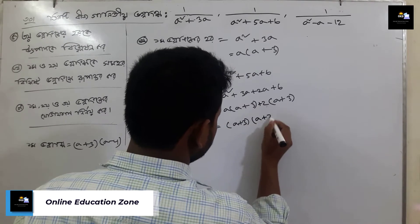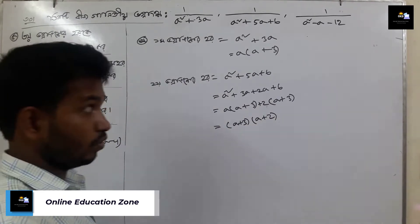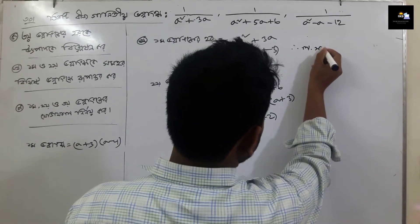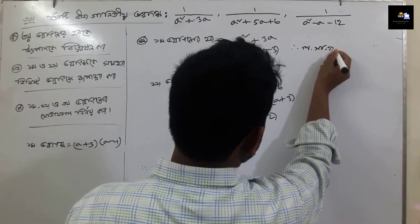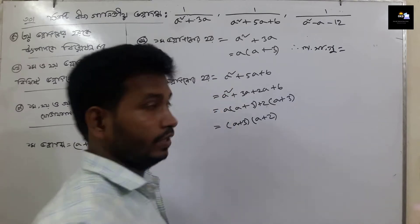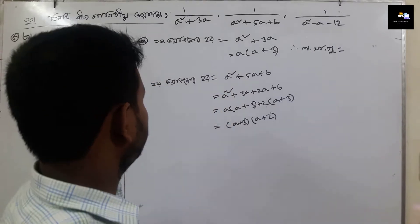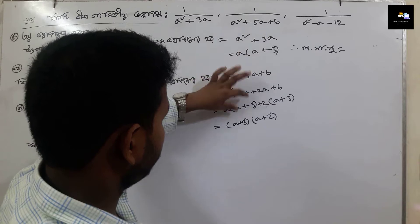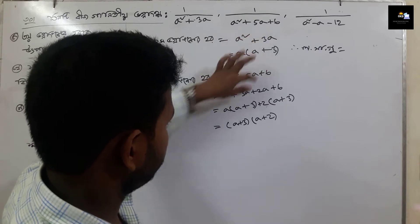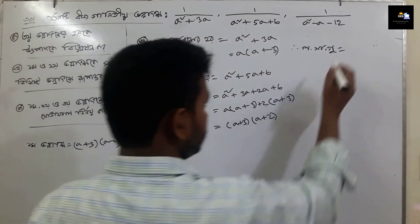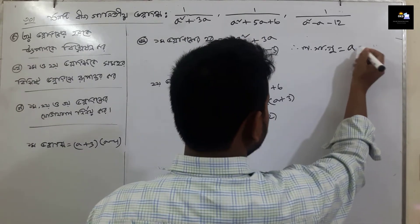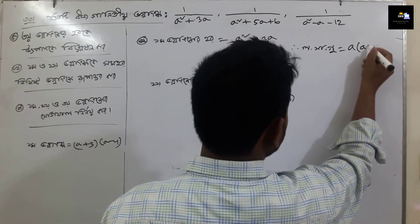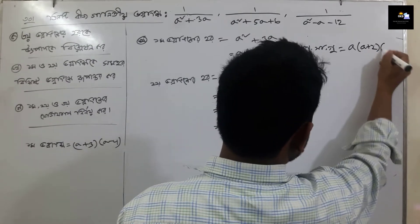So we can write a plus 3. We will add a plus 3 into a plus 2. So the factored form is a plus 2 into a plus 3.